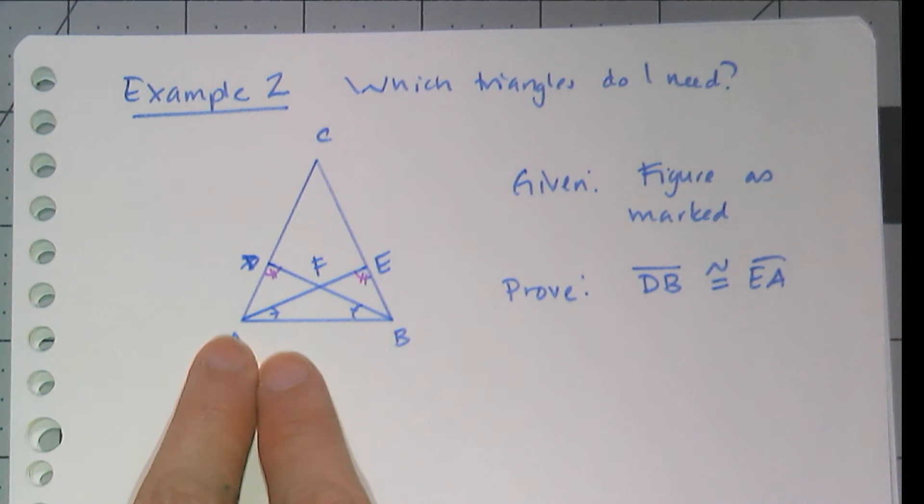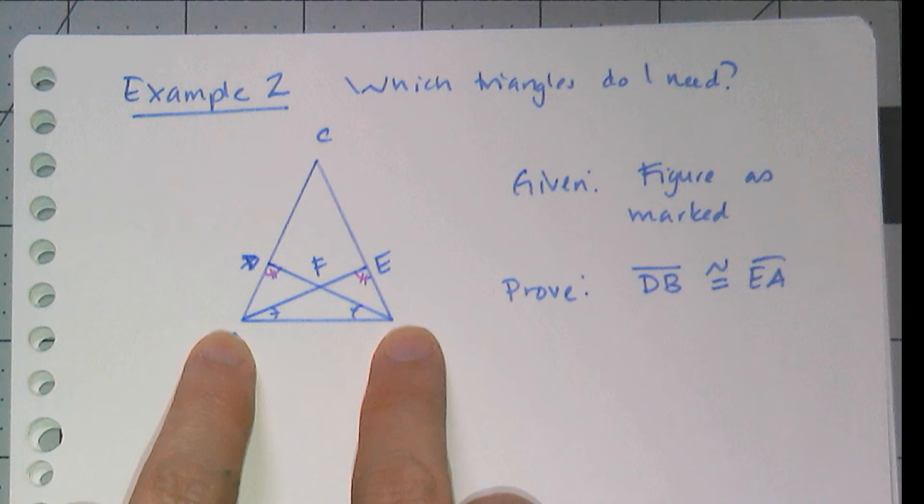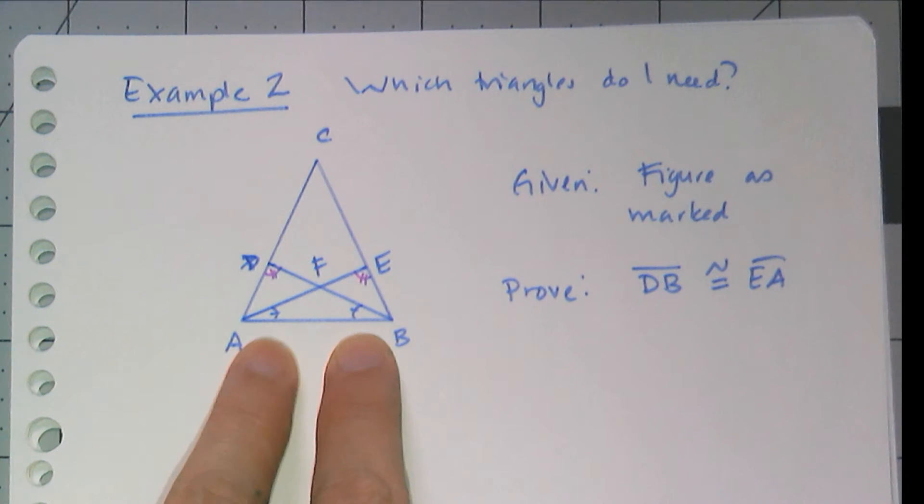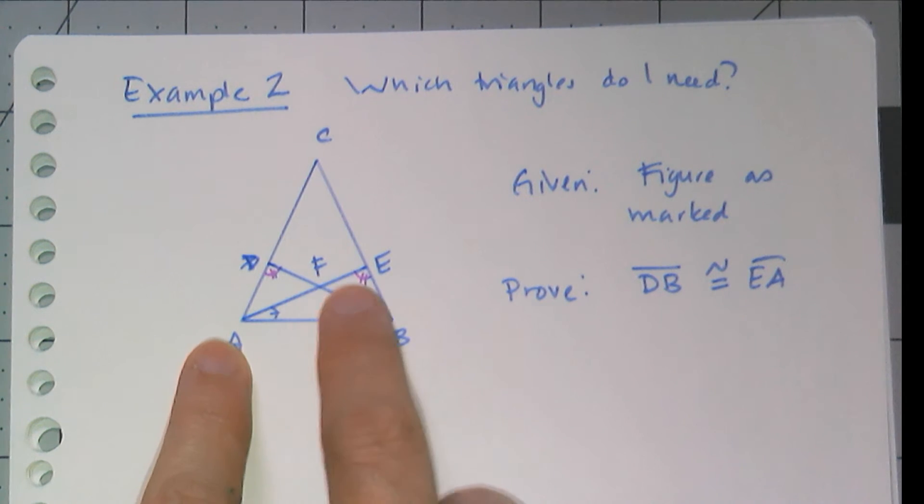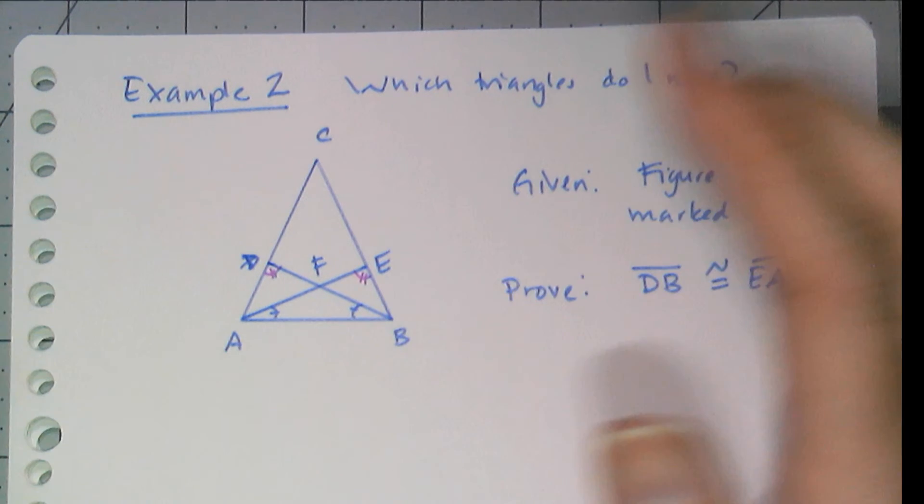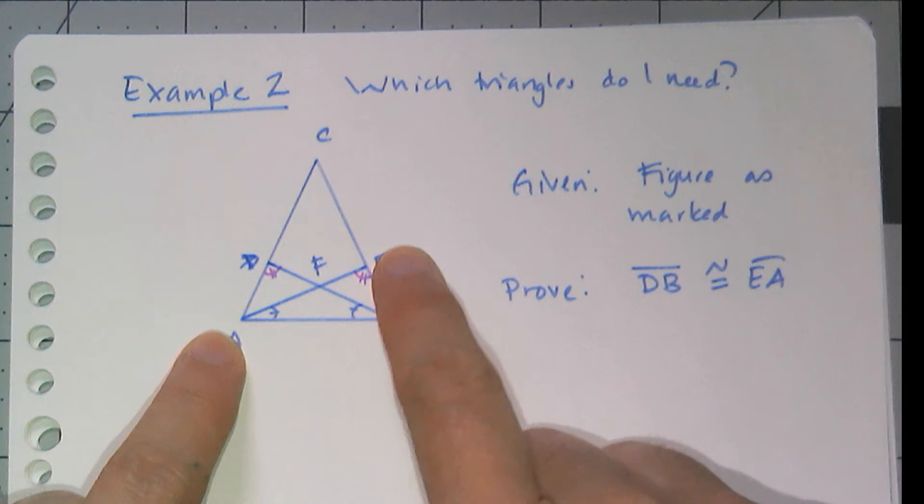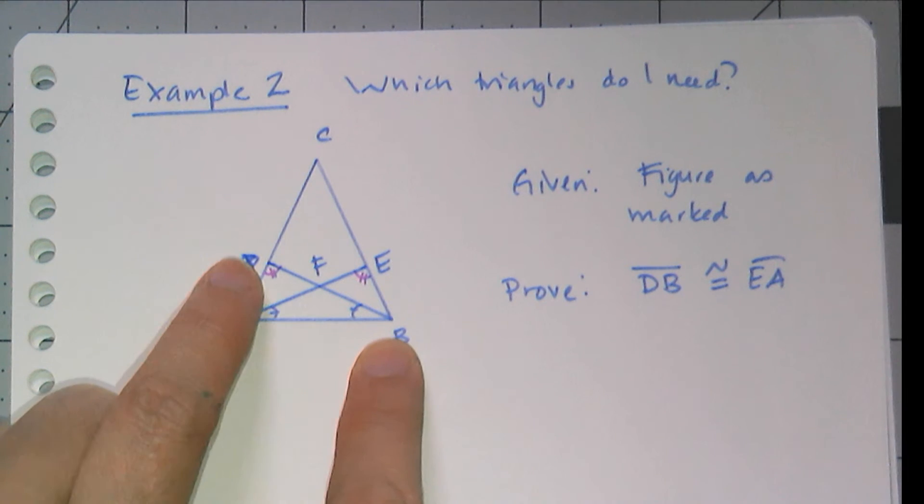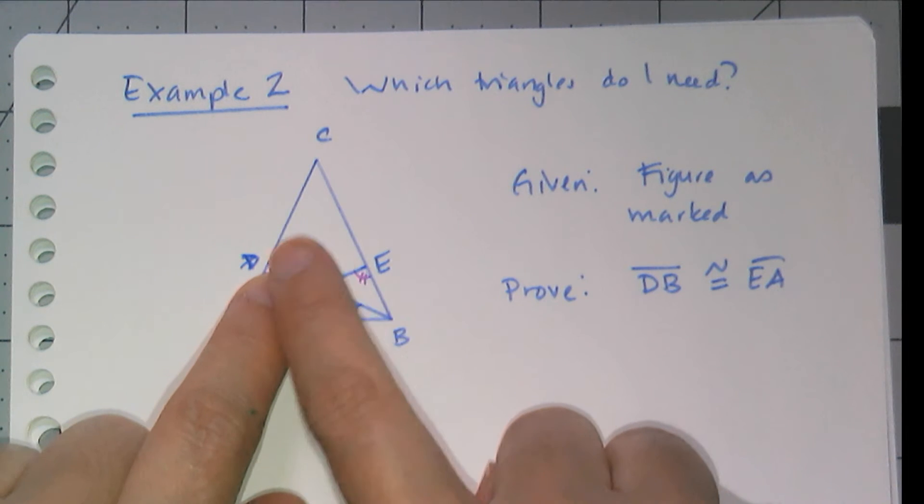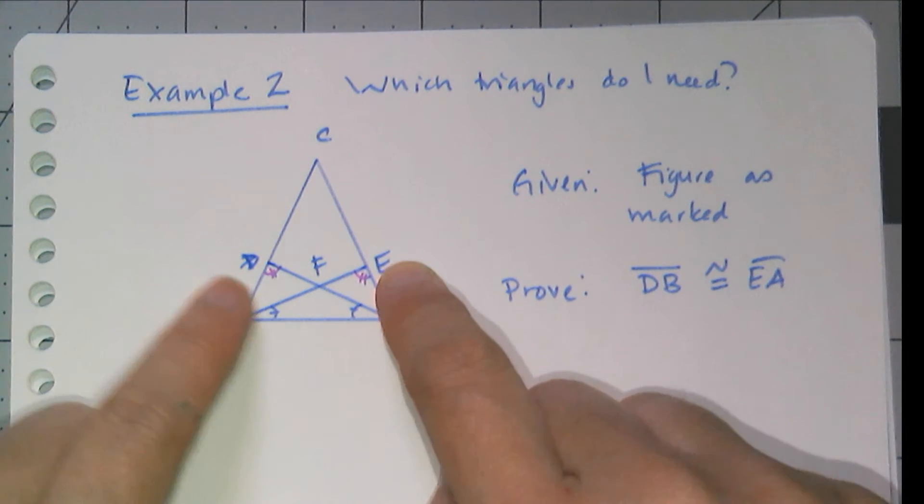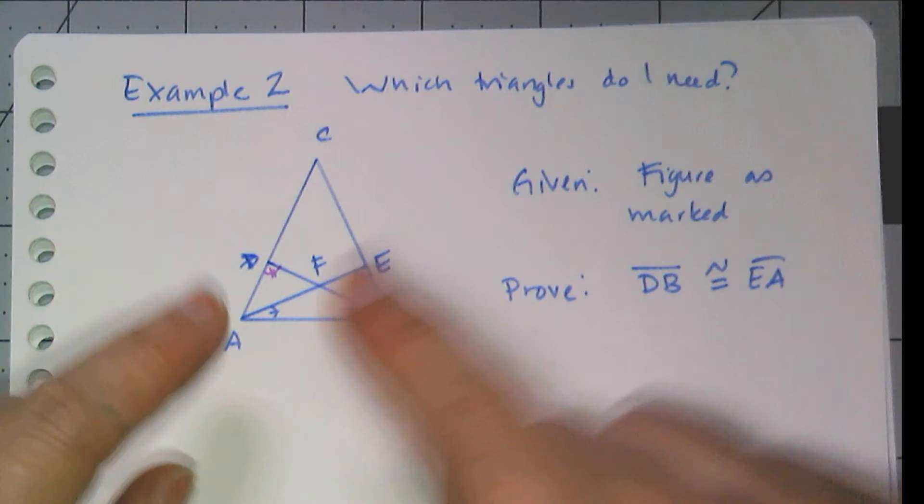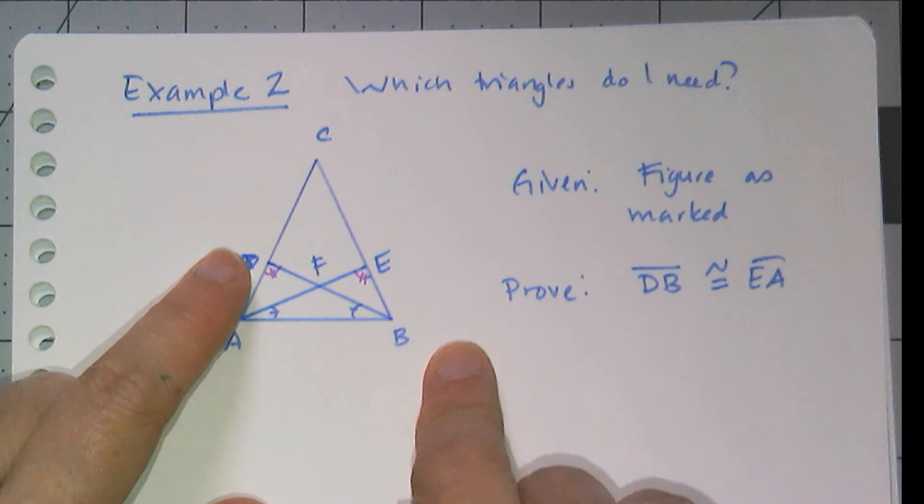And so then I see that this little angle here is congruent to that angle there, which means this triangle AFB is an isosceles triangle because those two base angles are congruent, and therefore I know that AF has to be congruent to FB. And then my little teenage brain would be like, oh, AF is a part of AE and FB is a part of DB, and so if I can show those two little parts DF and FE are congruent, then I can add those two together and I get AE is congruent to DB.